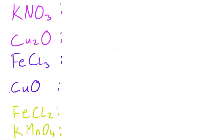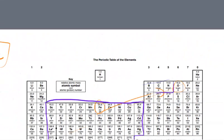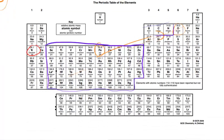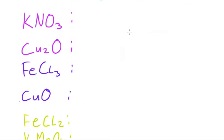The first one is KNO₃. I can see there's potassium, oxygen, and nitrogen — nitrogen is going to be variable whereas the other two are not. Potassium is in group one so it has an oxidation state of plus one. Oxygen I'll leave nitrogen for now — oxygen is two minus, and since we've got three of them, that's three times two minus which equals six minus.